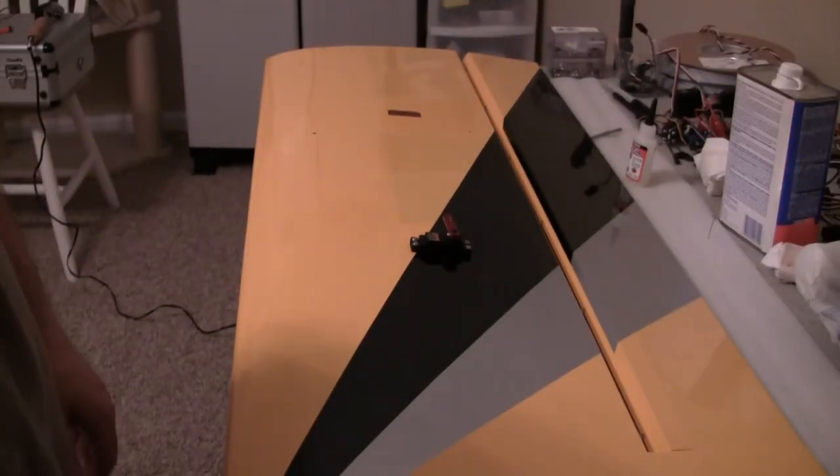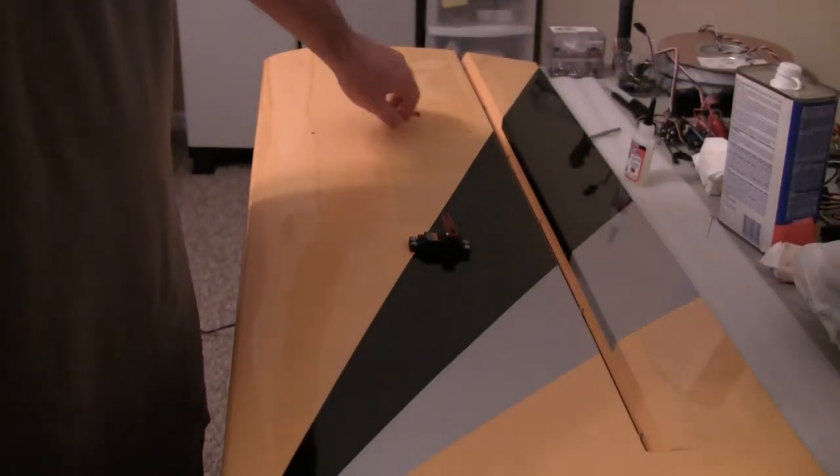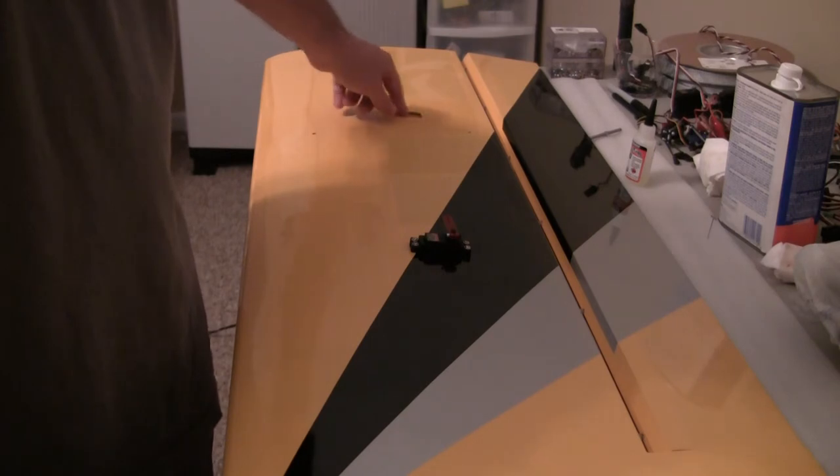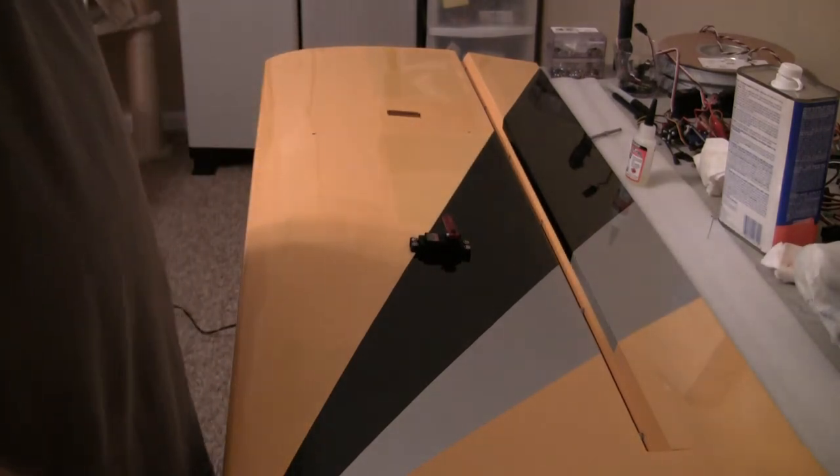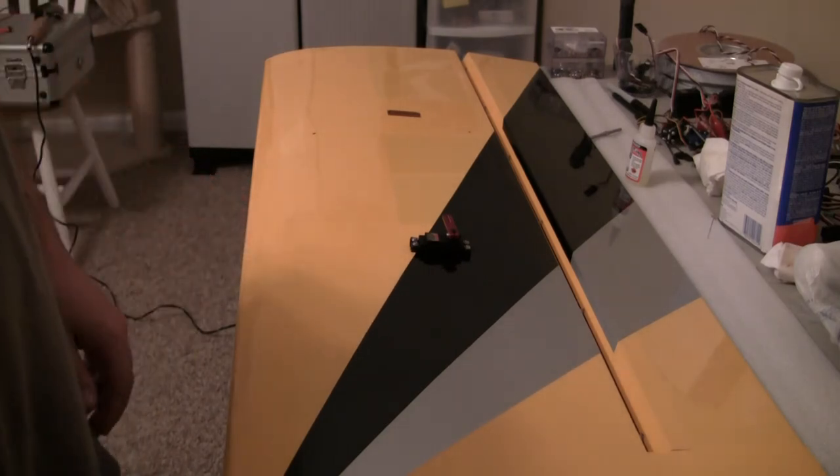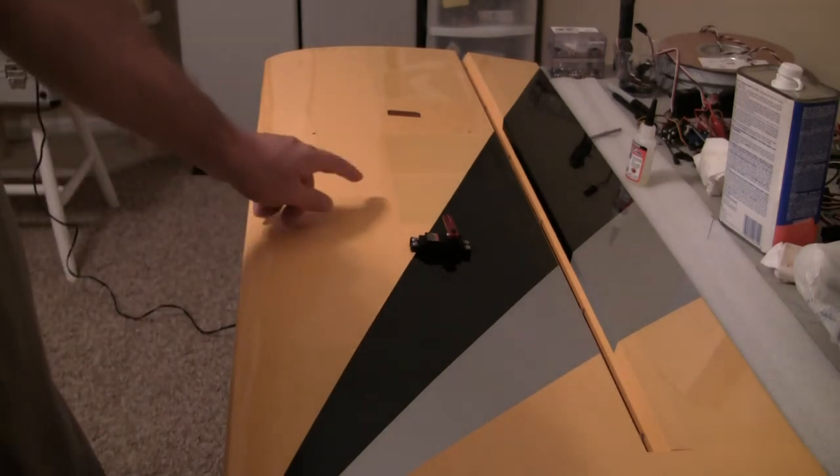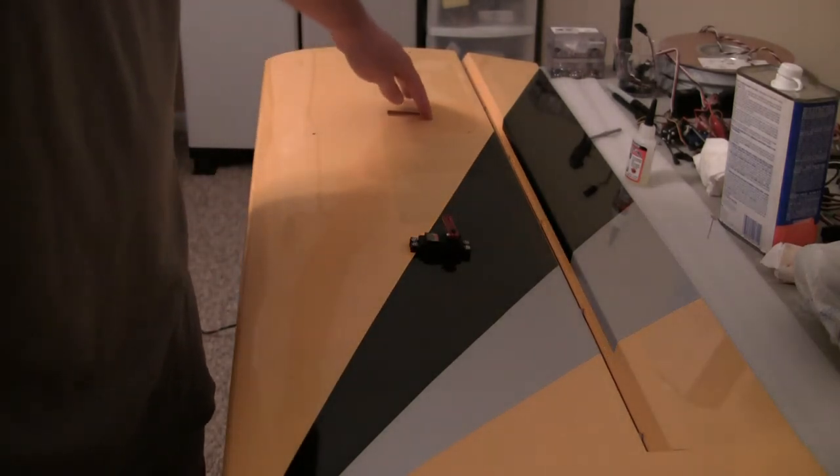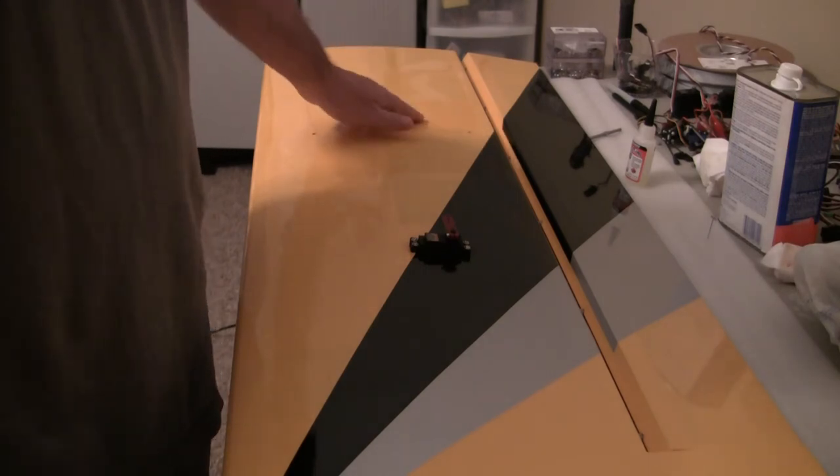The other hole down here, I'm either going to take some clear, put over it. This is an ultra coat, if I can find some matching, looks like cub yellow. If I can get some matching ultra coat, just put over it, cover it up.